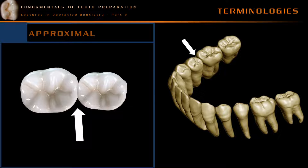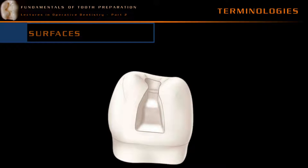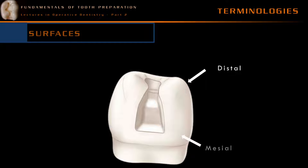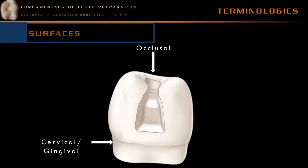Let's orient ourselves with a diagrammatic representation which appears throughout operative dentistry. The buccal surface is also called the facial surface. The lingual surface is also called the palatal surface. The distal surface in this picture is a surface which is not visible to us. The mesial surface is where the cavity is extending. The occlusal surface is the top surface in this picture. The gingival or cervical area denotes the most cervical, or towards the apical, part of the tooth.